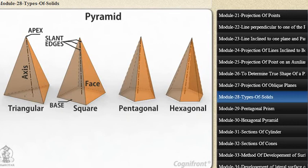A right regular pyramid has its axis perpendicular to the base, which is a regular plane figure. Its faces are all equal isosceles triangles. Oblique prisms and pyramids have their axis inclined to their bases.